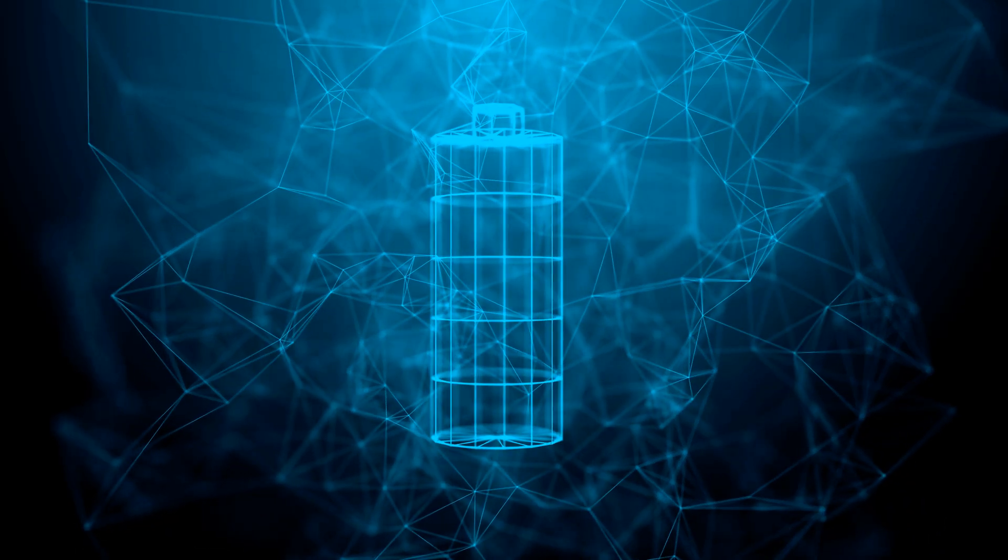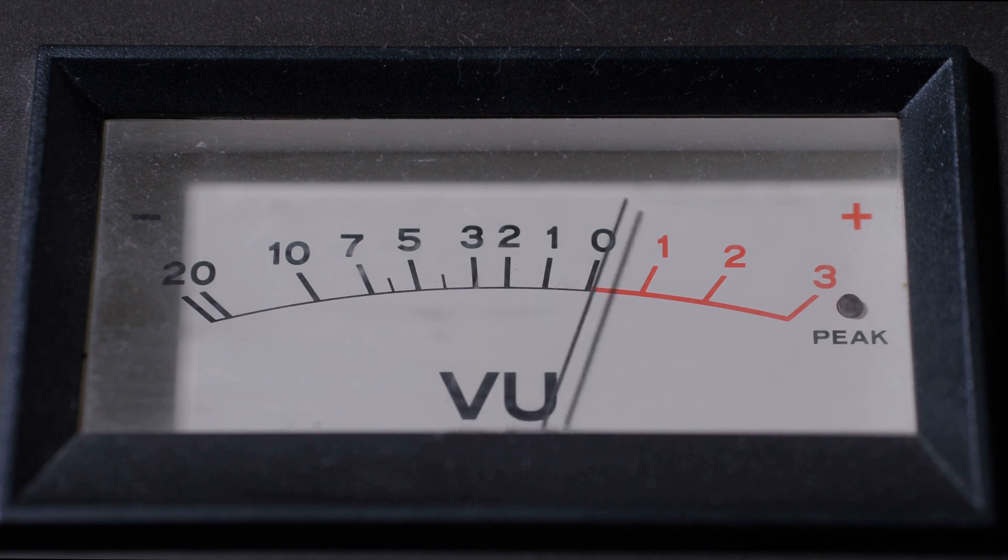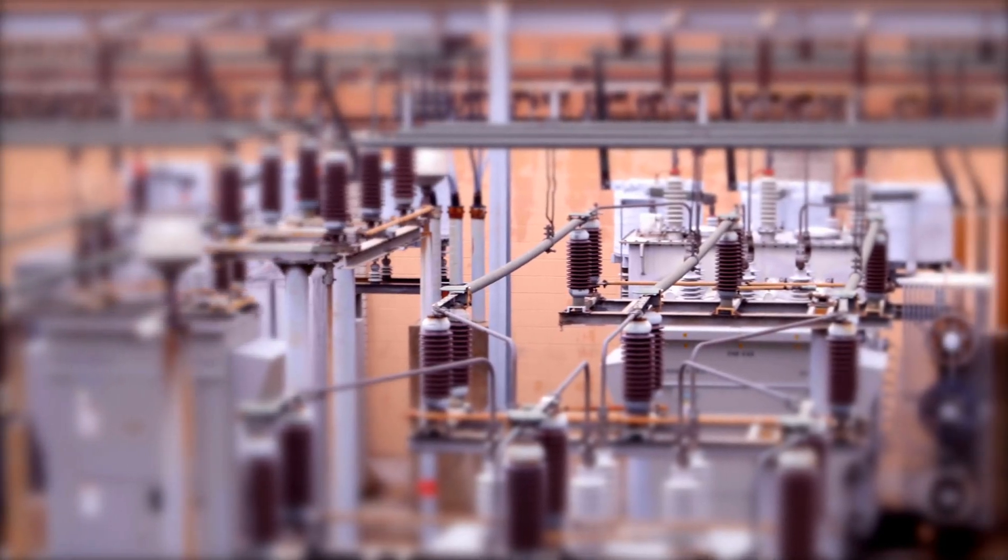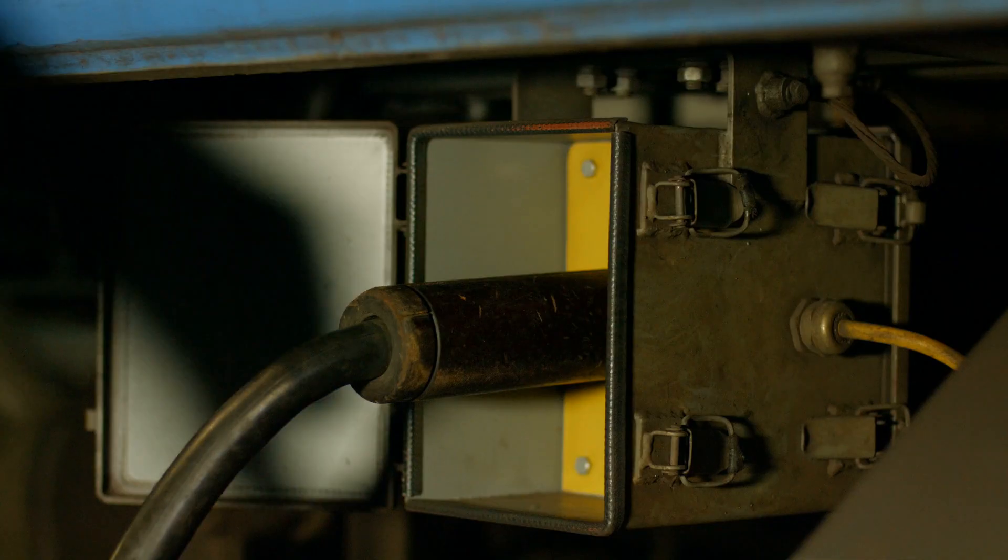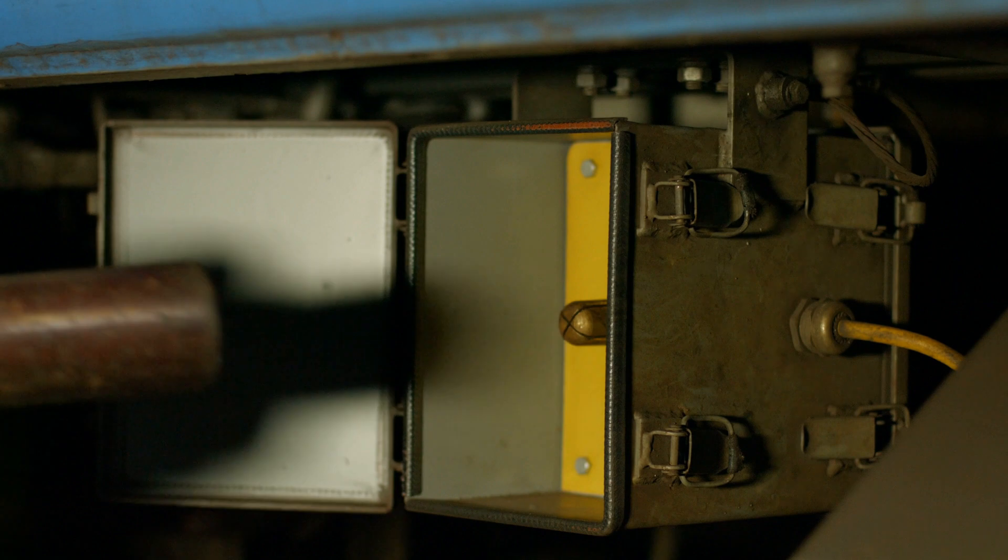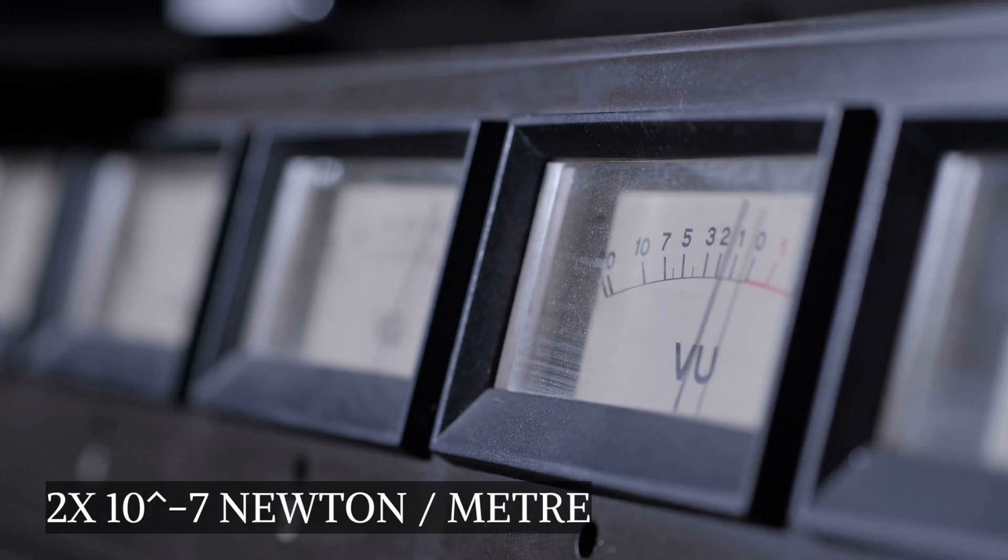The ampere, which is the standard unit of current, is the constant current that, if maintained in two straight parallel wires of infinite length and negligible circular cross-section placed one meter apart in vacuum, produces a force of 2×10^-7 newtons per meter of length between them.